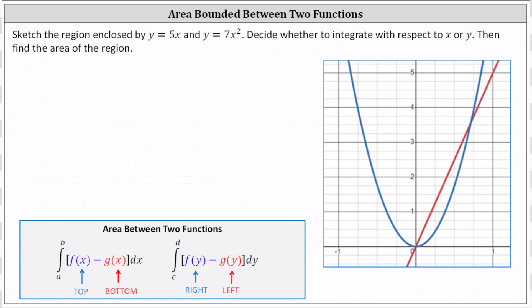Recall when determining the area bounded by two functions with respect to x, the integrand function is f of x minus g of x, which is the top function minus the bottom function, and the limits of integration are x values. To find the area with respect to y, the integrand function is f of y minus g of y, or the right function minus the left function, as functions of y, and the limits of integration are y values.